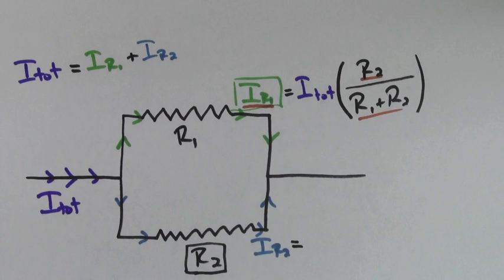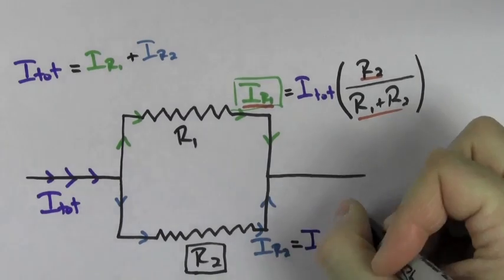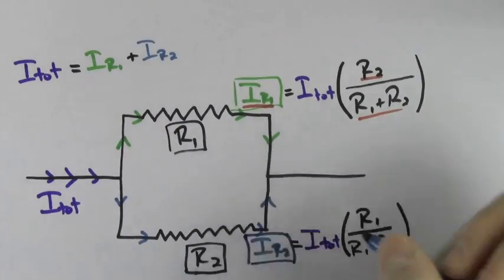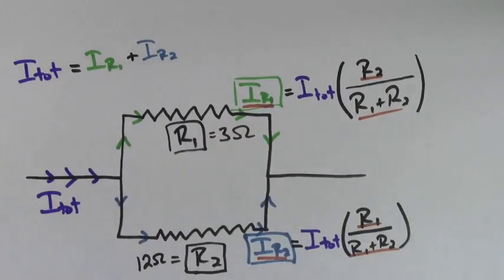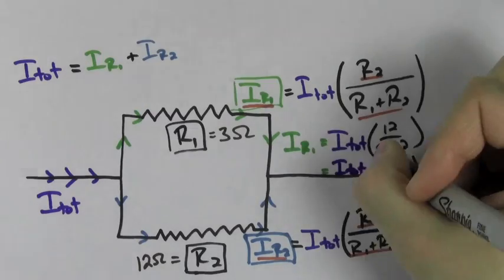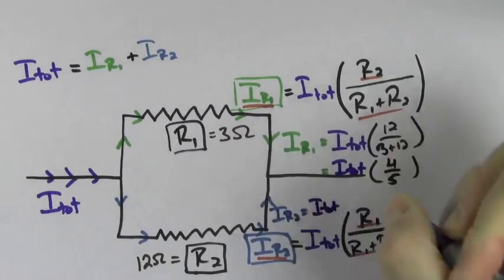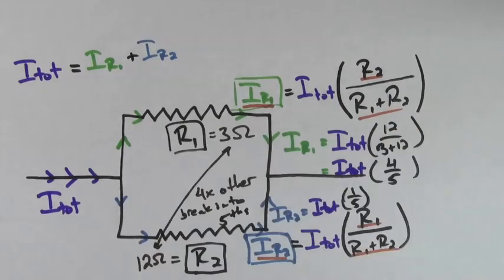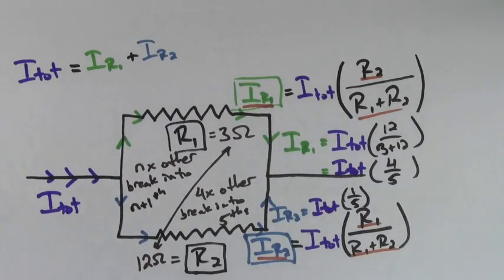Similarly, the current through R2 is going to equal the total current times the ratio of R1 over R1 plus R2. If R1 equals 3 ohms and R2 equals 12 ohms, R1 is going to get four-fifths of the total current and R2 is going to get one-fifth of the total current. That's because one resistor was four times bigger than the other resistor, so you break the current into fifths. If one resistor is n times bigger than the other resistor, you break the current into n plus 1ths.